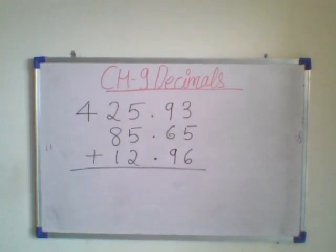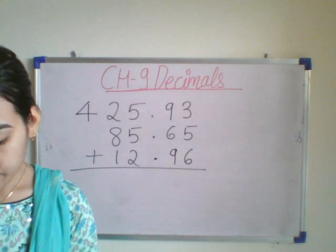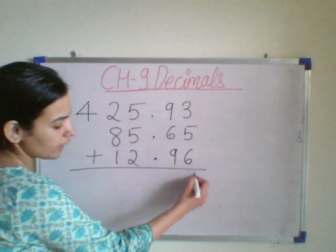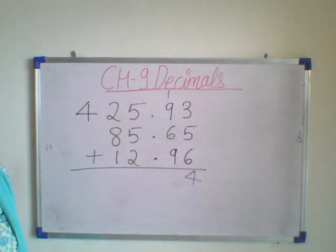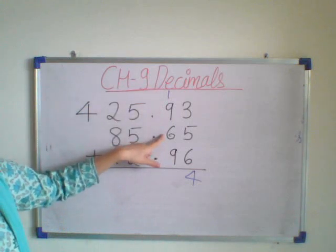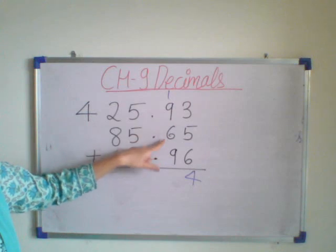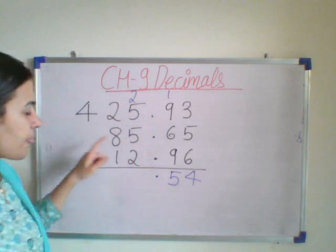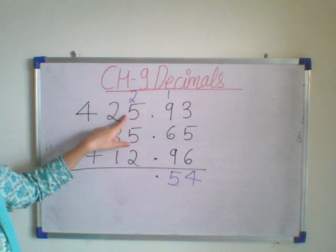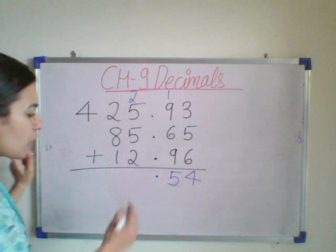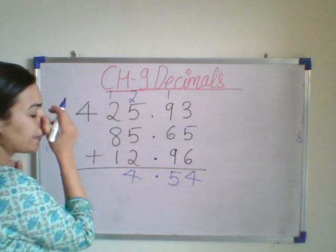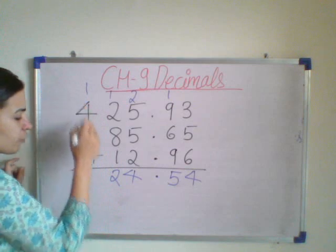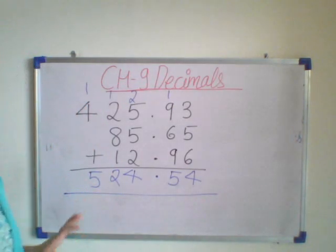So let us do the addition. Here 3 plus 5 plus 6 is 14, so 4 I write down and 1 is carried. Now 9 plus 1 is 10, 10 plus 6 is 16, 16 plus 9 is 25 — so 5 and 2 moves to carry. I will be putting the decimal here. Then 5 plus 5 plus 2 is 12, plus 2 is 14 — 4 written, 1 carries. Then 8 plus 1 is 9, continuing — 4 plus 1 is 5. So you have to do the simple addition.